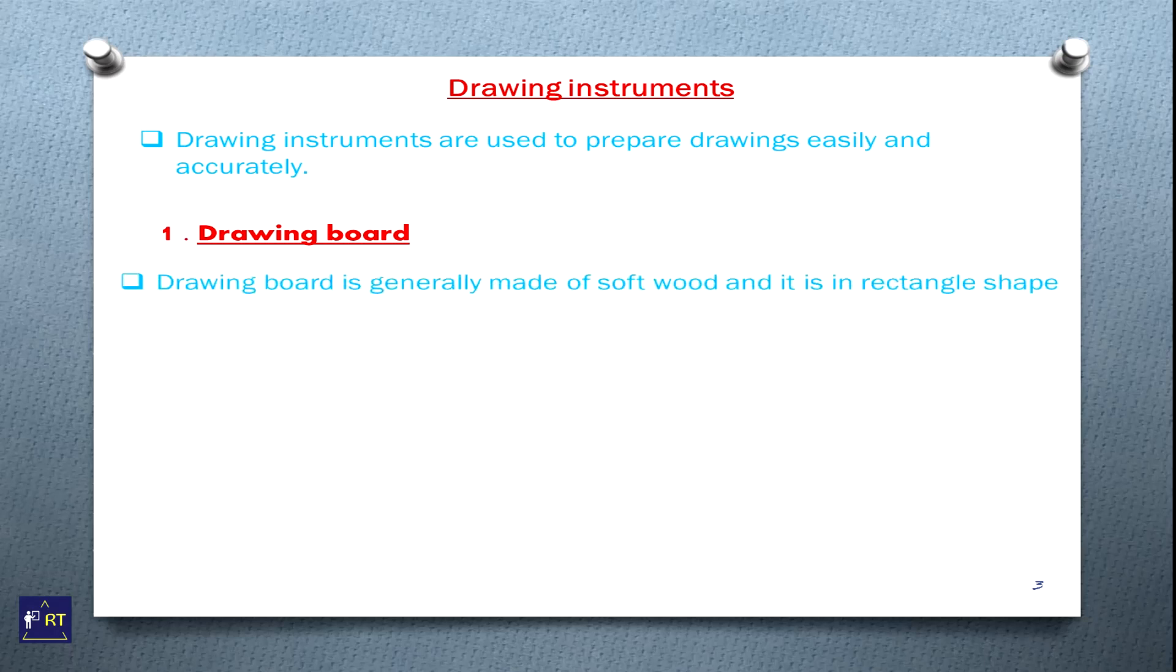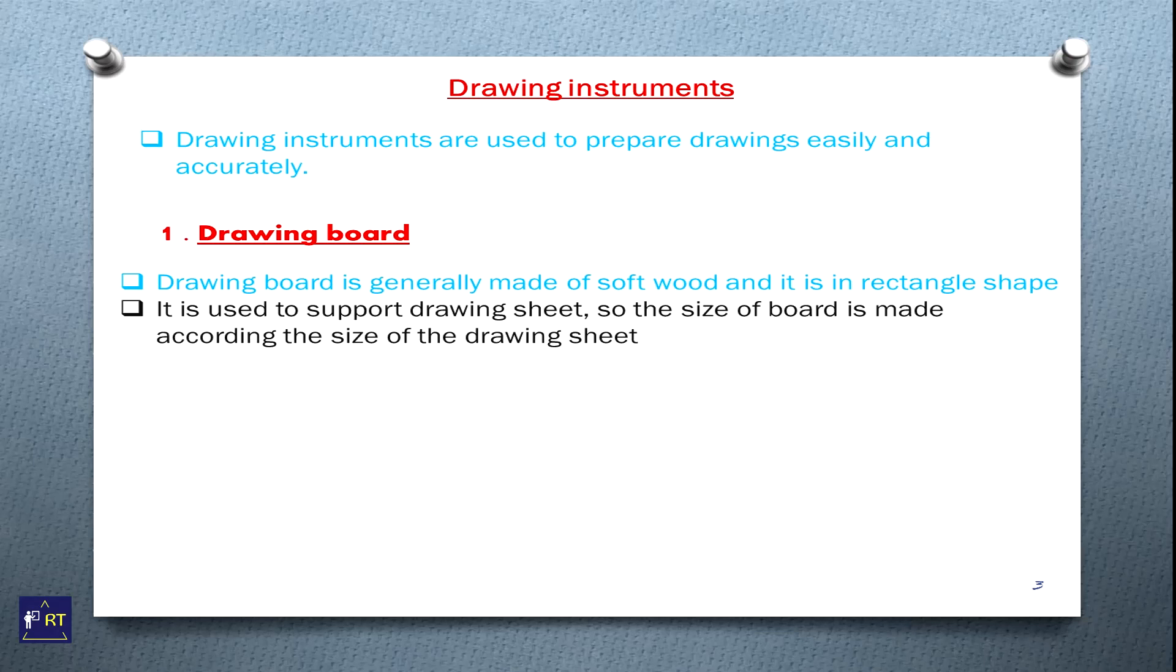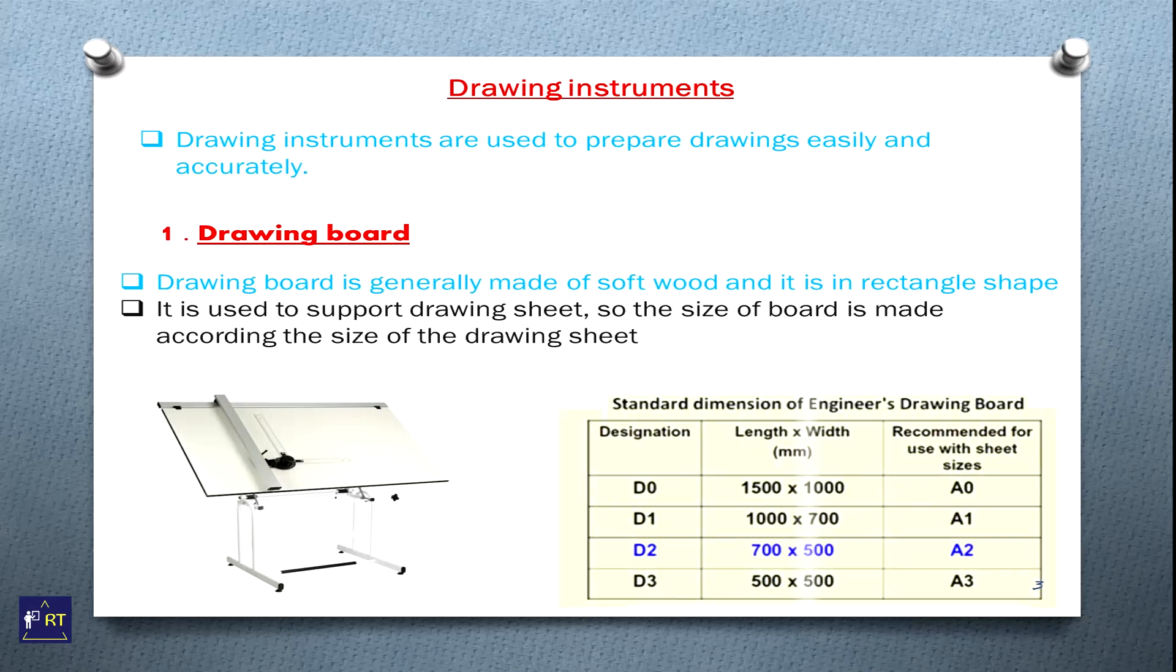1. Drawing board. A drawing board is generally made of soft wood and it is in rectangle shape. It is used to support drawing sheet, so the size of board is made according to the size of drawing sheet. This is the image of drawing board and this is the standard drawing board size: D0, D1, D2, D3 with different length and width sizes, according to recommended use with sheet size.